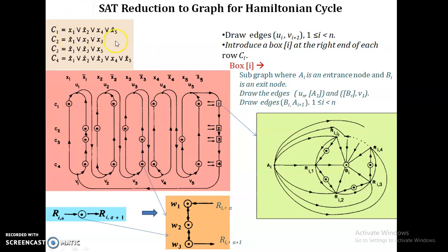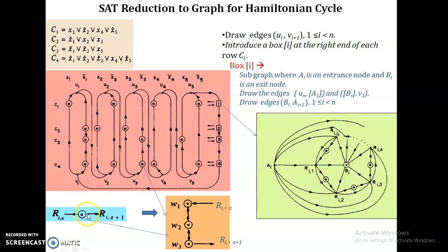For example, if clause c1 has four literals, from a1 it visits r11 (x1), then r12 (x2-bar), then r13 (x4), then x5-bar, and returns. It is not necessary to visit all literals since this is a disjunction — if any one literal is true, the clause is true and the path can reach exit node b. Each transition from one literal to the next passes through three widget nodes, represented by a star symbol in the graph.